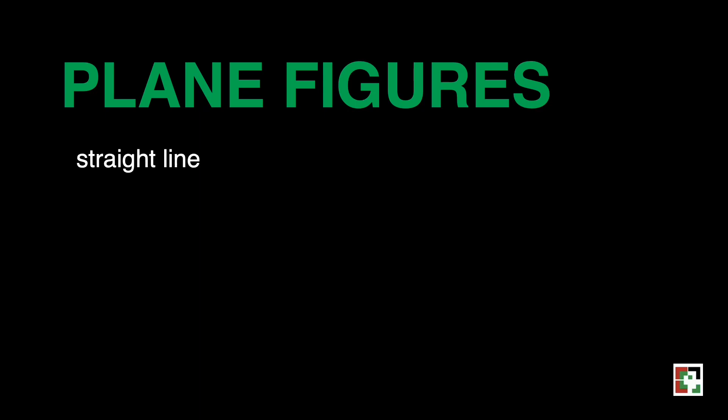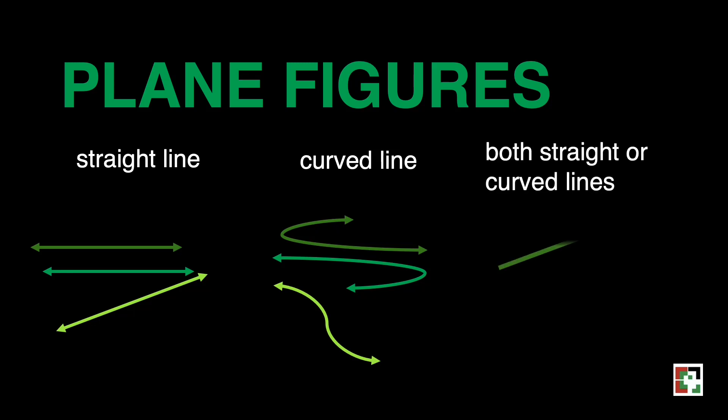Plane figures can be composed of a straight line, curved line, or both straight and curved lines. There are two major categories of plane figures. These are open figures and closed figures.